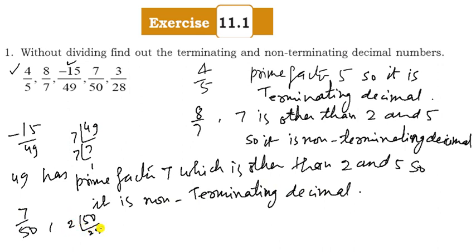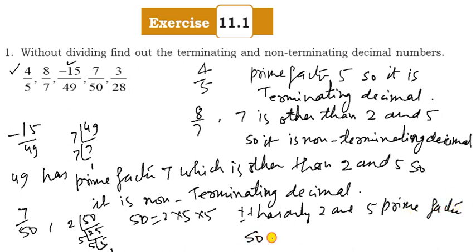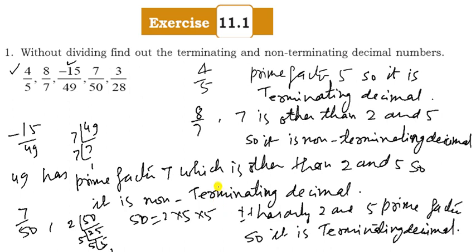For 7 upon 50: factorise 50. We get 50 = 2 × 5 × 5. It has only 2 and 5 as prime factors, so it is a terminating decimal.